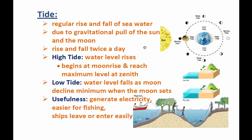The next type of movement of ocean water is tides. Tides are the regular rise and fall of sea water — sometimes the sea water rises and also falls gently. These tides occur because of the gravitational pull of the sun as well as the moon. When the moon comes between the earth and the sun, a high tide usually occurs, and when the earth is between the sun and the moon, a high tide also occurs. Tides rise and fall twice a day.